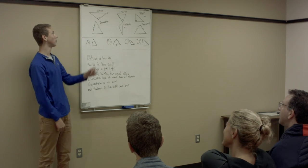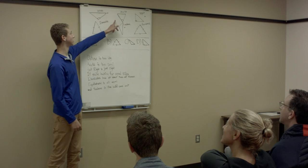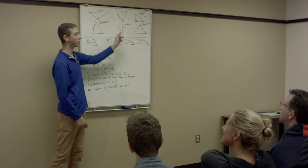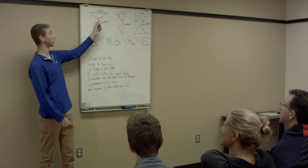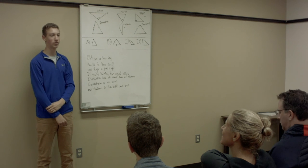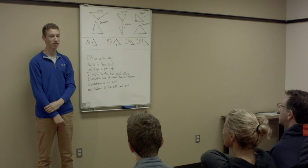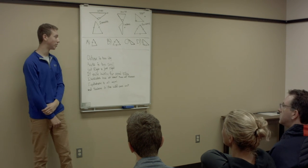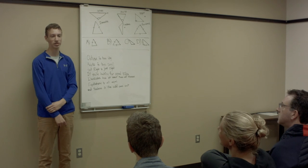All right class, nice job. We learned all six types of triangles today — three identified by their angles and three identified by their side lengths. We did a great job today. I'll see you next class when we learn about circles.